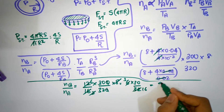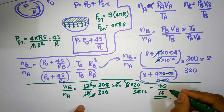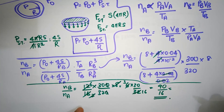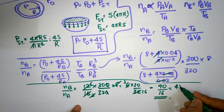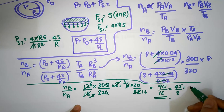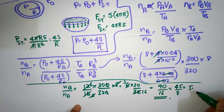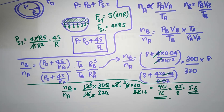So I get 90/16, which simplifies to 45/8, and that turns out to be 5.625 — approximately 5.6. That's the answer. See you next time!